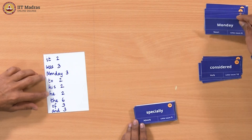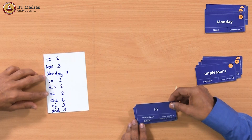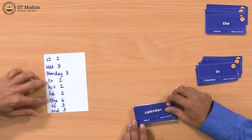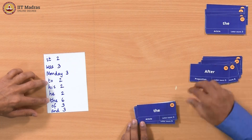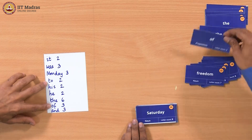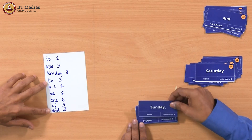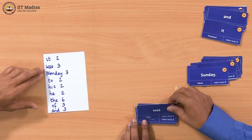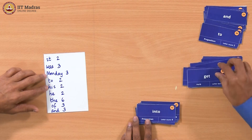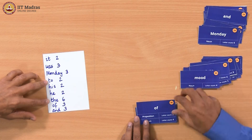Especially - keep it. Unpleasant - keep it. 'In' - surprisingly appears only once even though it is a common word in this paragraph, so we keep it. 'The' - definitely discarded. Calendar - keep it. After - keep it. 'The' again - discard. Delicious - keep it. Freedom - keep it. 'Of' - discard. Saturday - yes, we keep Saturday. 'And' - too frequent, discard. Sunday - keep it. 'It' - goes away. 'Was' - also gone. Difficult - yes, keep. 'To' - goes away. Get - keep. Into - keep. 'The' - gone. Monday - gone. Mood - keep. 'Of' - gone. Work - keep. 'And' - gone.